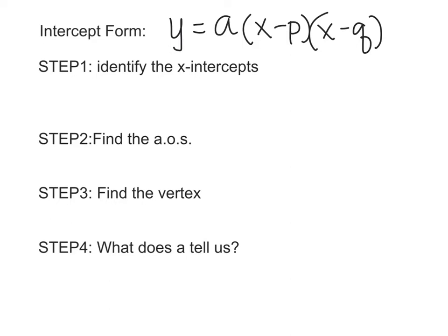So the first step to be able to graph in intercept form is to identify the x-intercepts. To do that the x-intercepts are the values x equals p and x equals q. Now we're going to put a little asterisk by this because we like to think of this as the opposite of p and q.